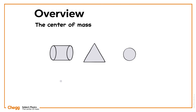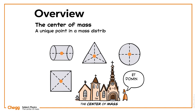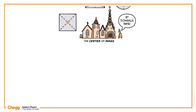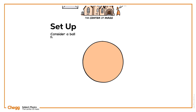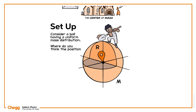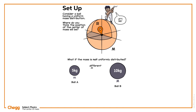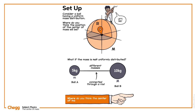Today we will discuss the concept of the centre of mass. The centre of mass is a position or unique point in a mass distribution where all the mass is supposed to be concentrated. Consider a ball having a uniform mass distribution — where do you think the position of the centre of mass will be? Consider two metal balls of different masses connected through a rod — where do you think the centre of mass of this system will be? We will find the answers to all these questions in this video.